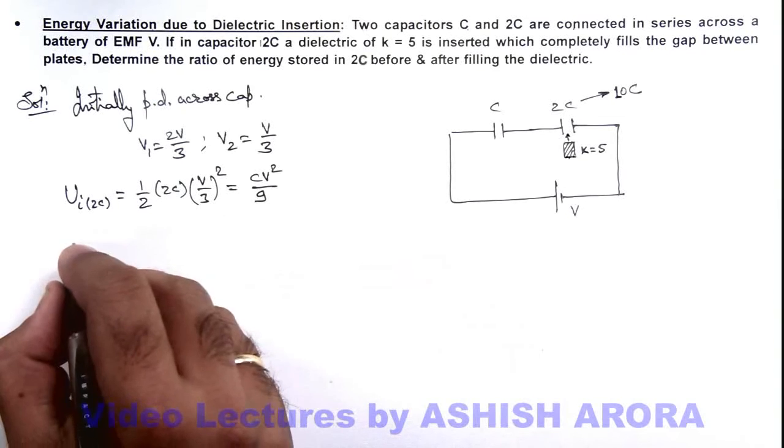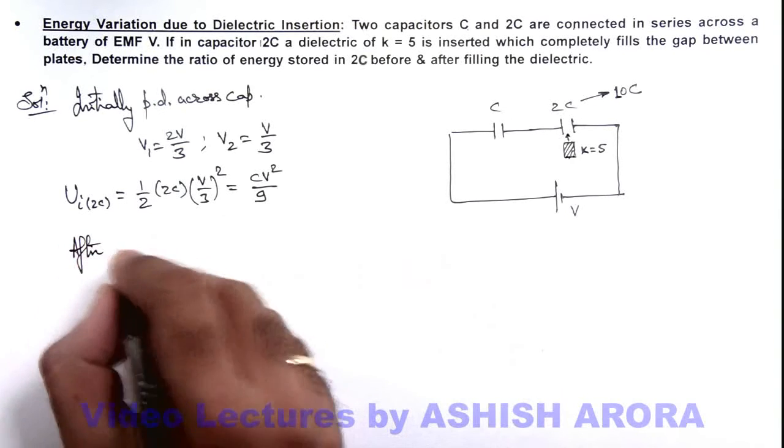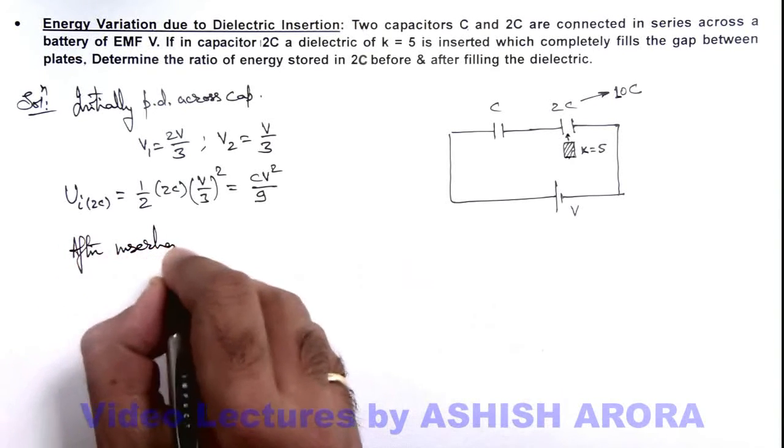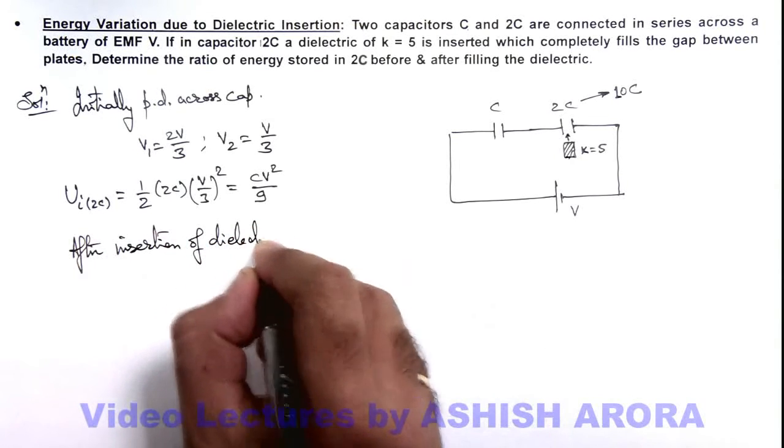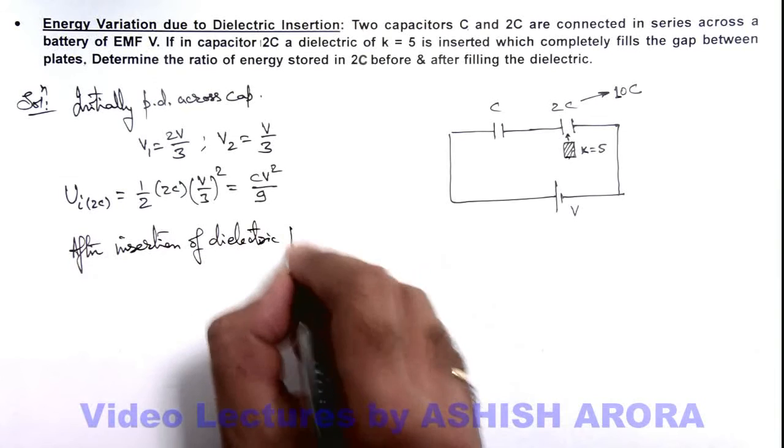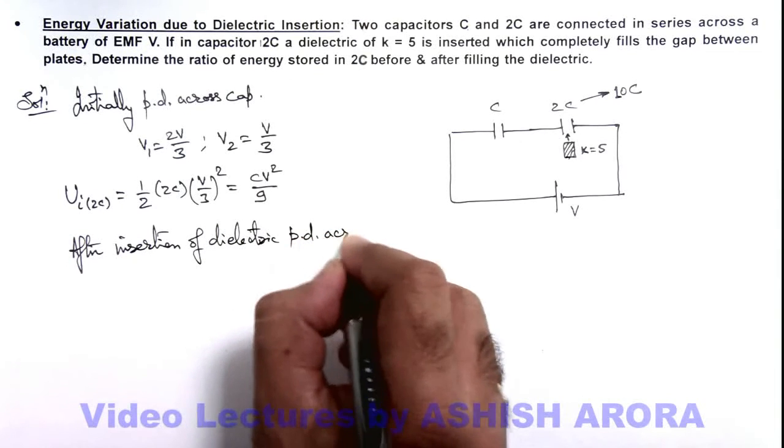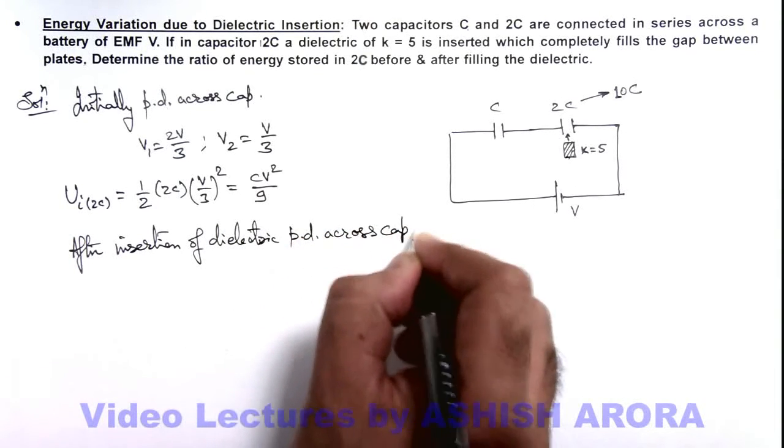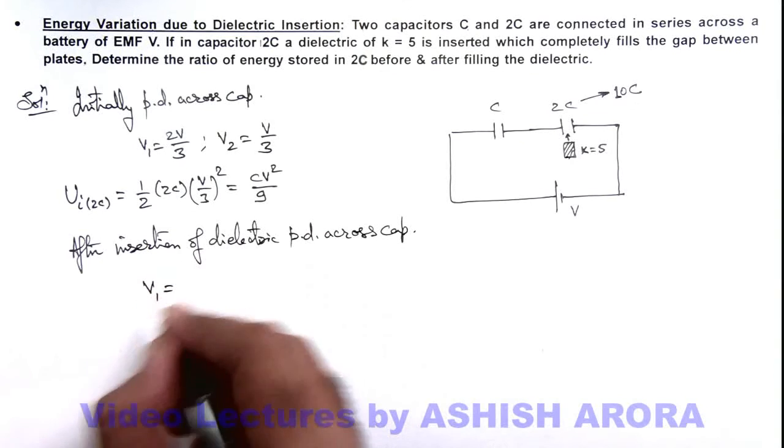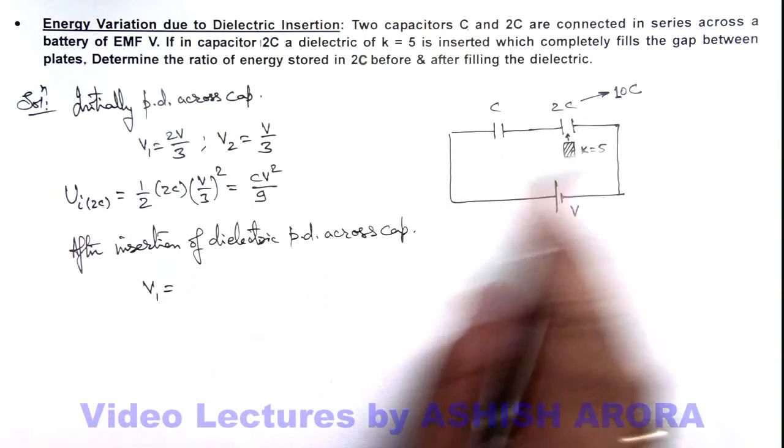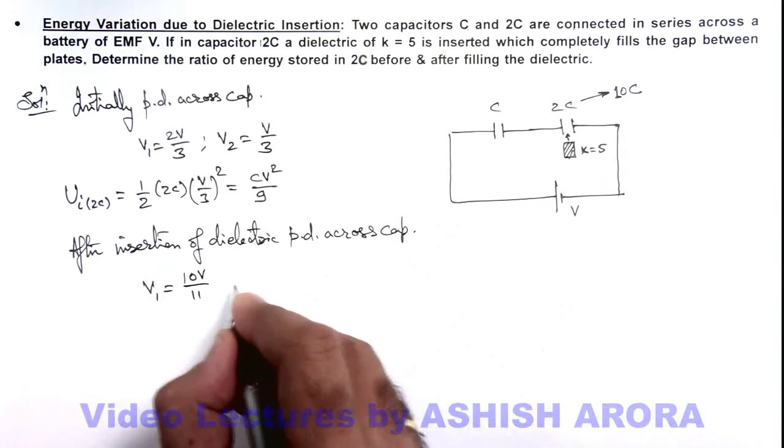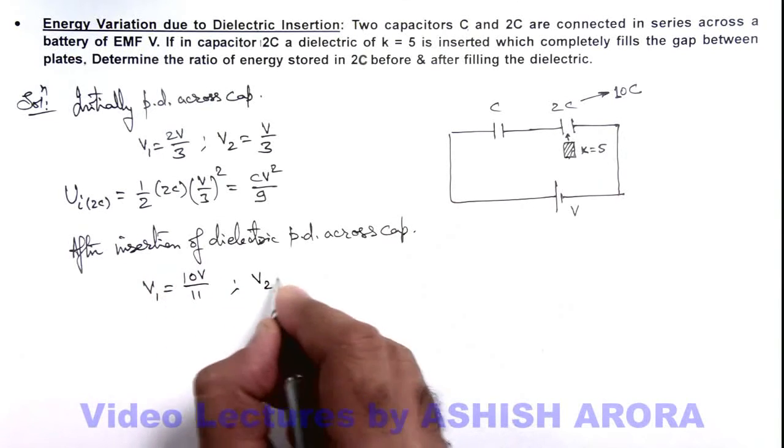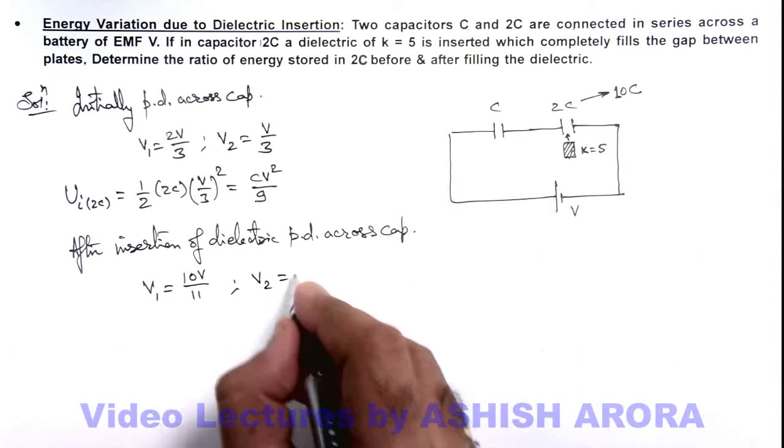So if we calculate after insertion of dielectric potential difference across capacitors, then here we can write this value of V1 will be 10C multiplied by V upon 11C, so this is 10V by 11. And across the second capacitor it'll be V by 11.